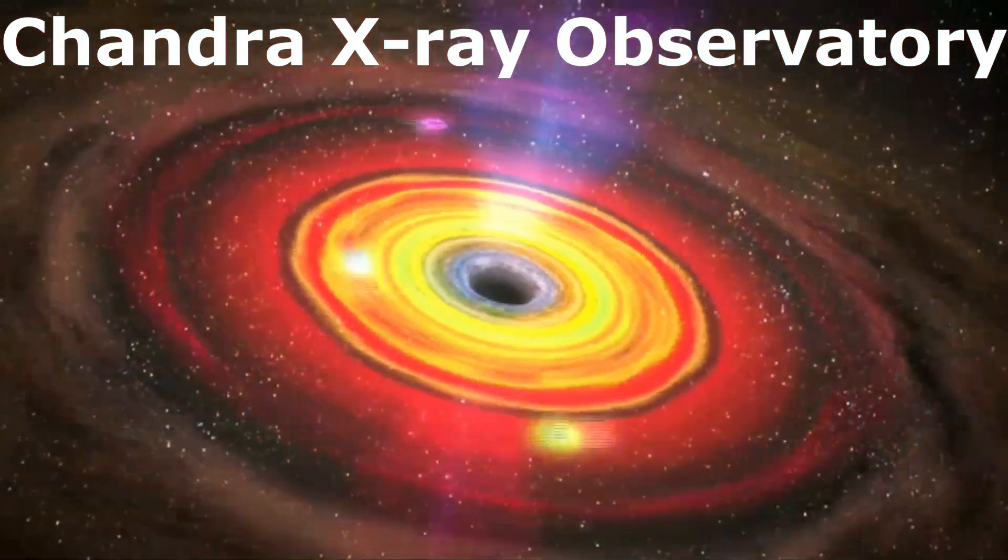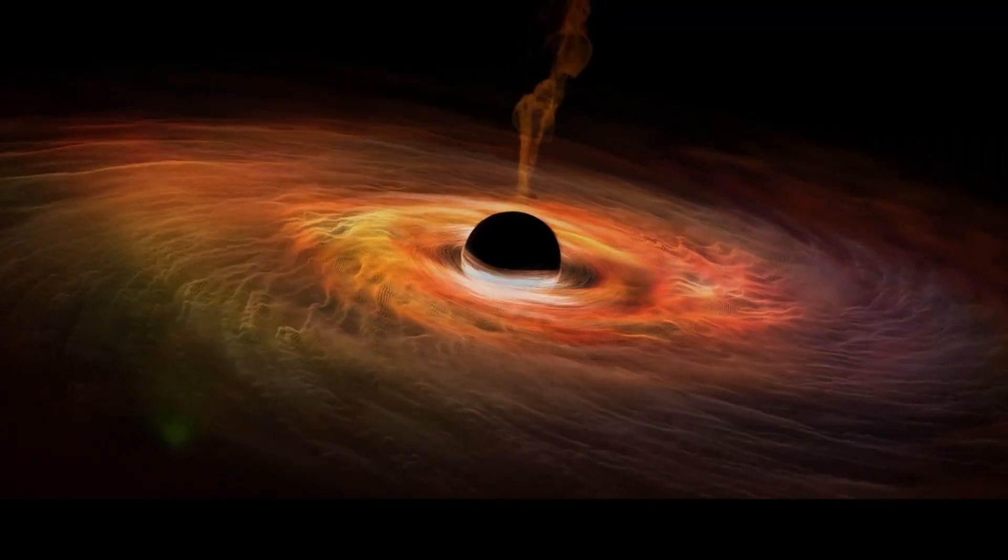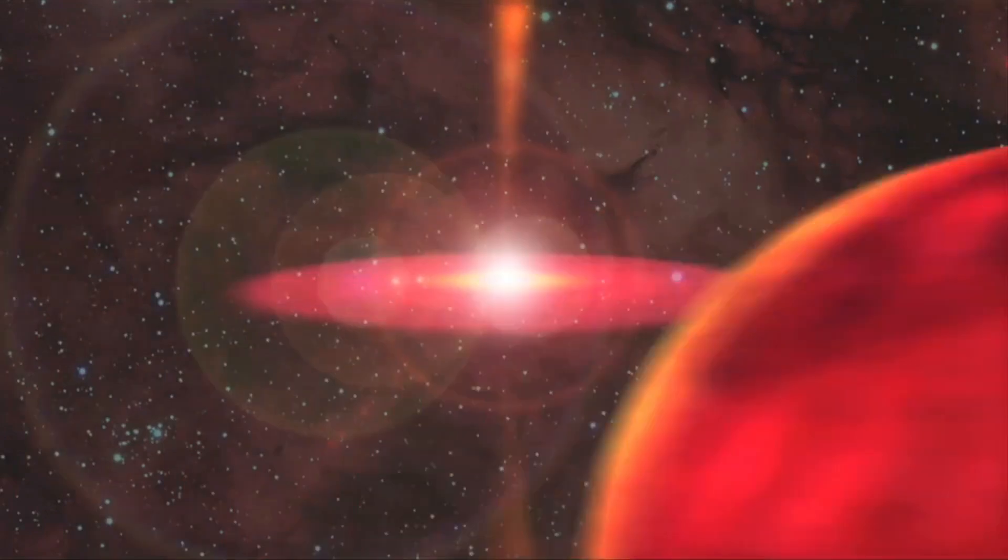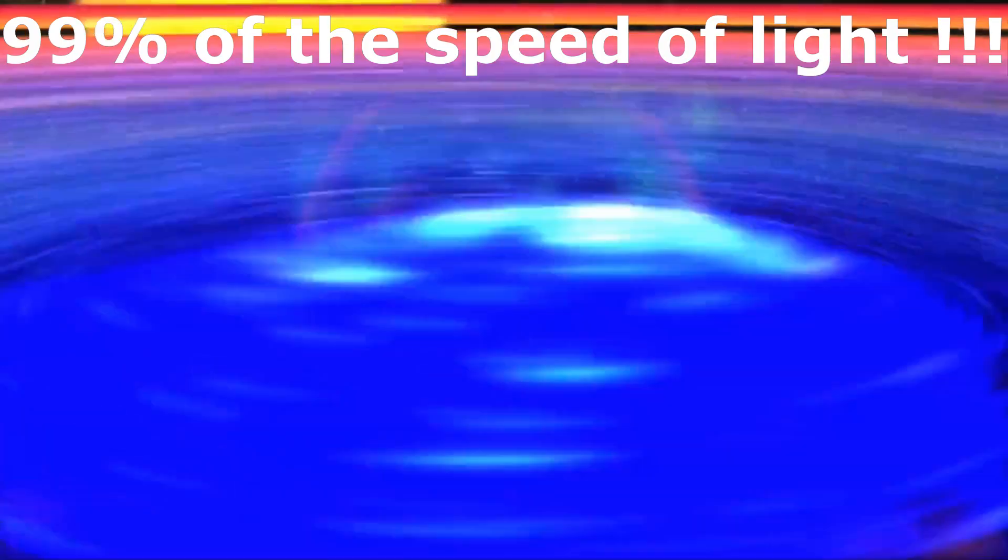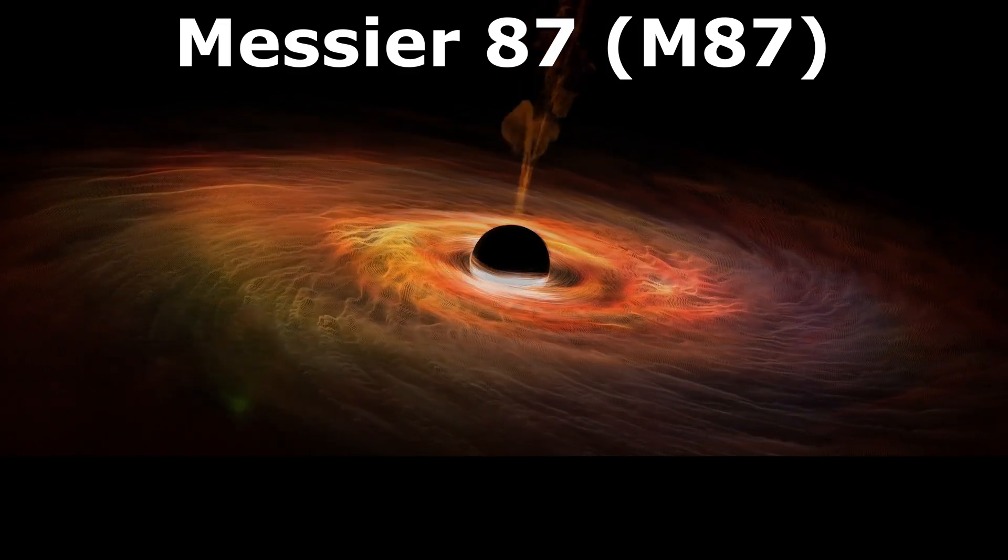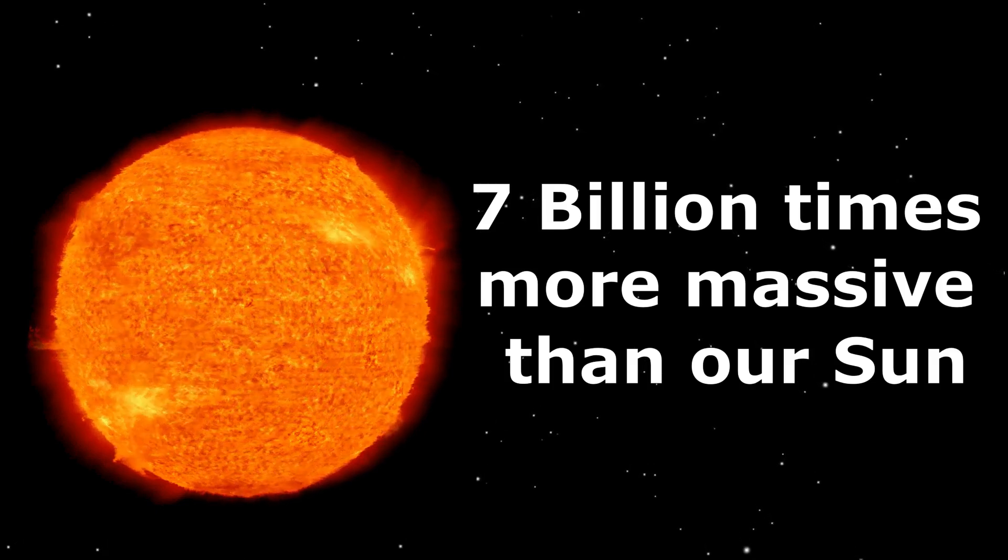The Chandra X-ray Observatory has spotted a supermassive black hole that has shattered all the records of rotational speed. This black hole is spinning at 99% of the speed of light. The black hole named Messier 87 or M87 is 7 billion times more massive than our sun.